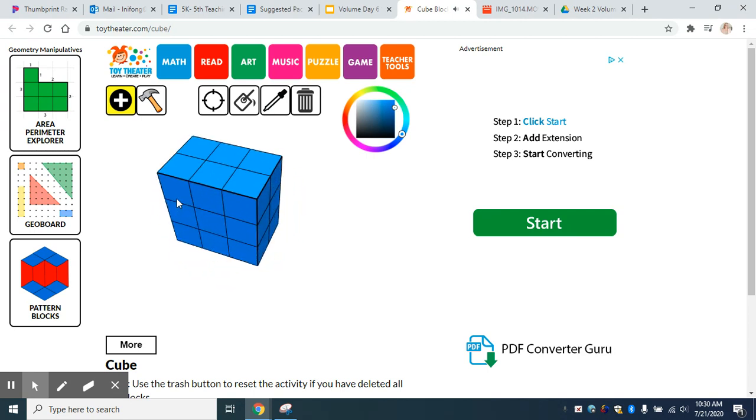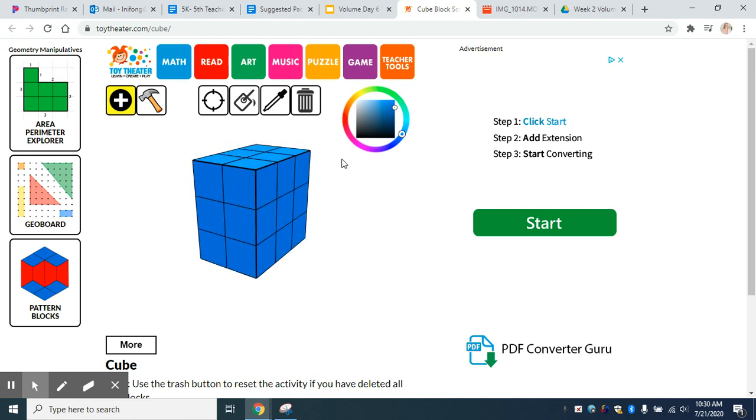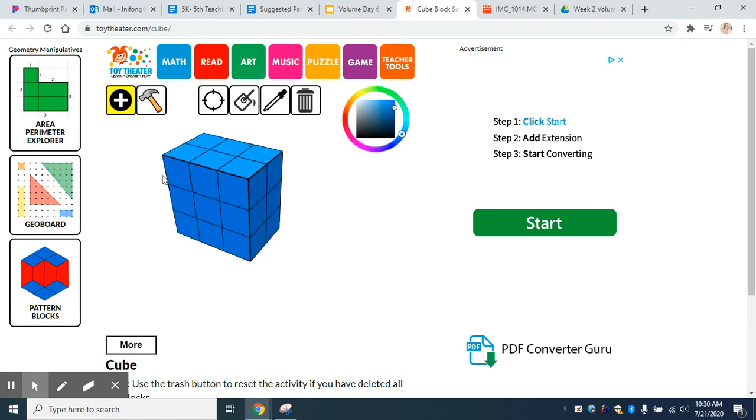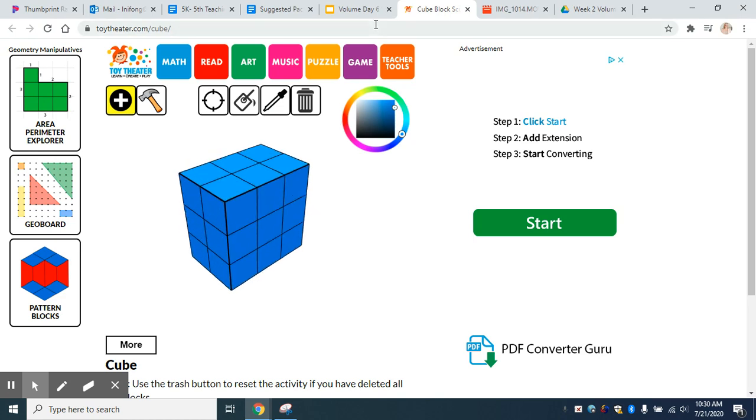Okay, I can kind of drag it around to get a better view of the top, the side, the front, and I can use all of that information to determine what was that total volume. Well three layers of six, I know three times six is 18 unit cubes.